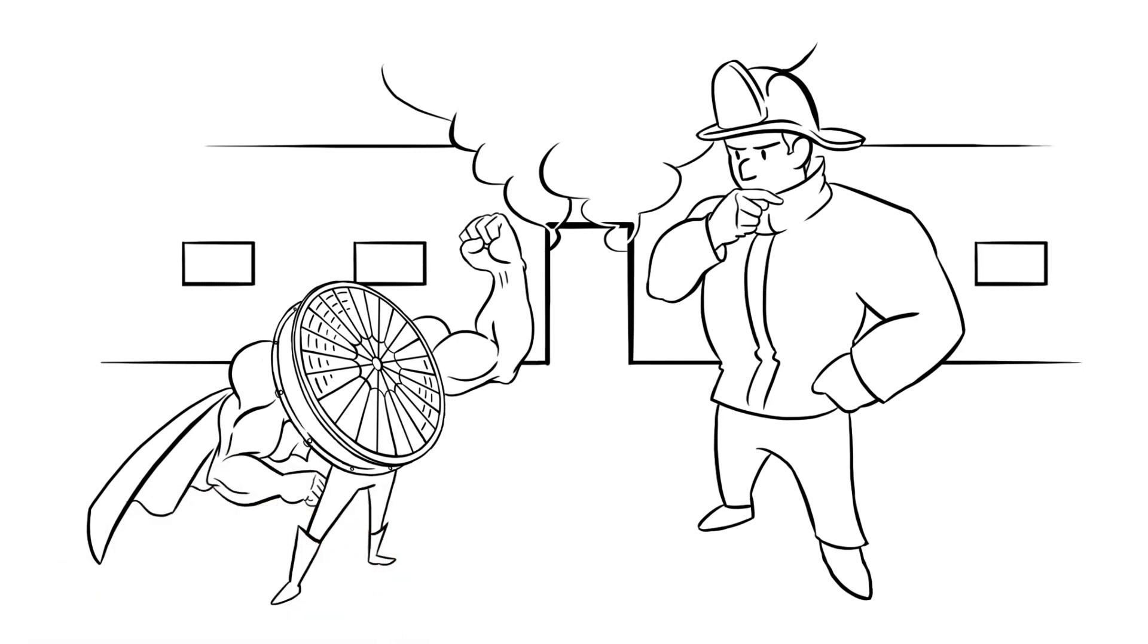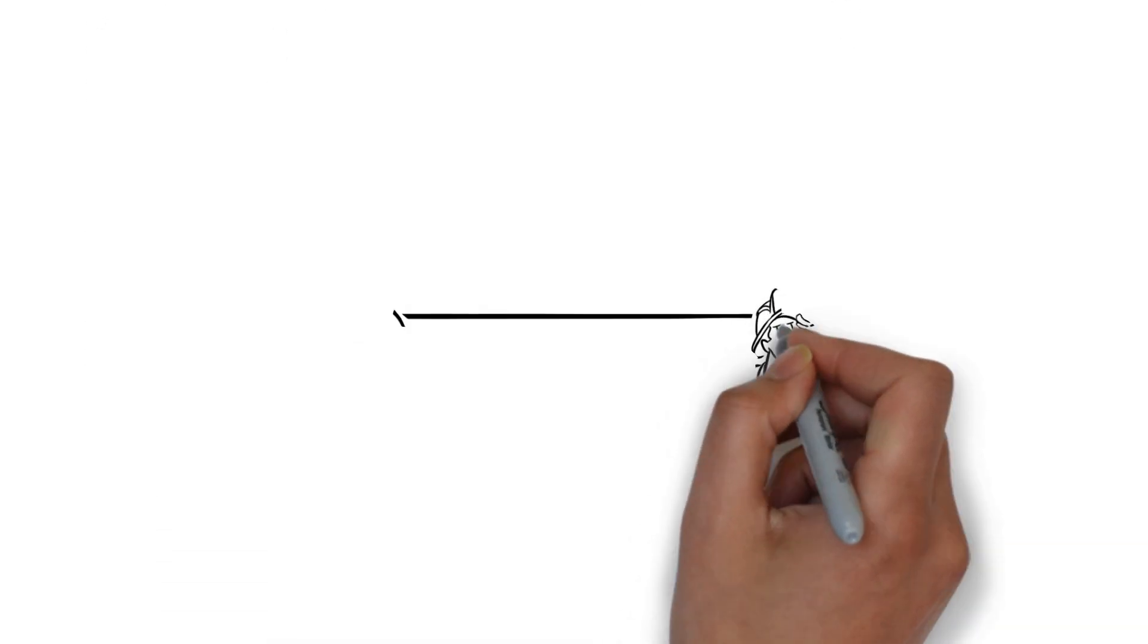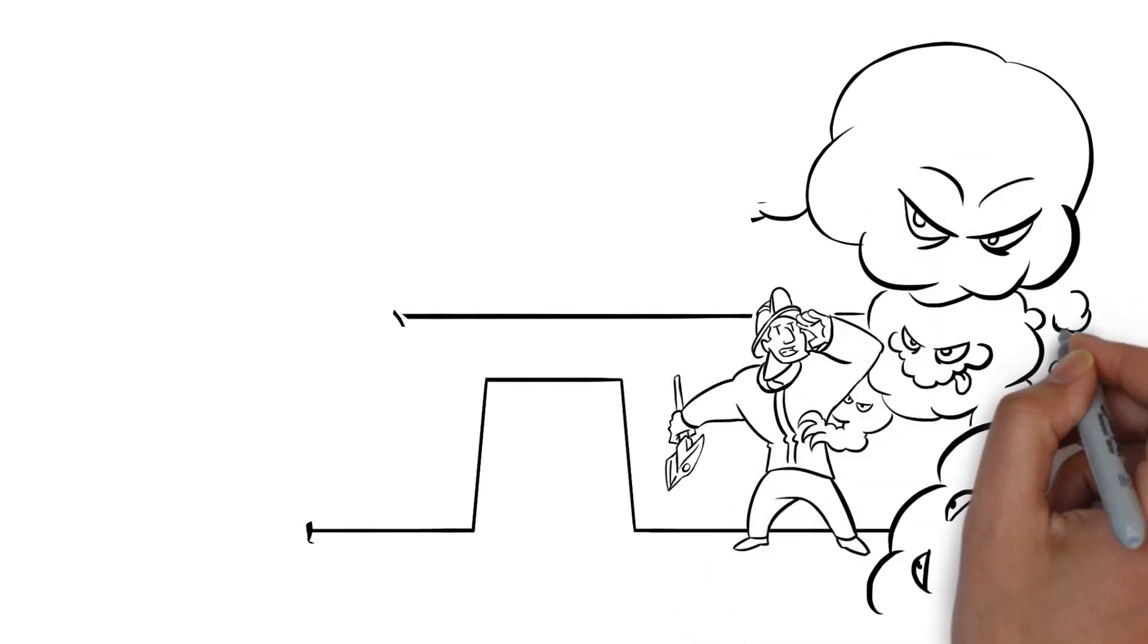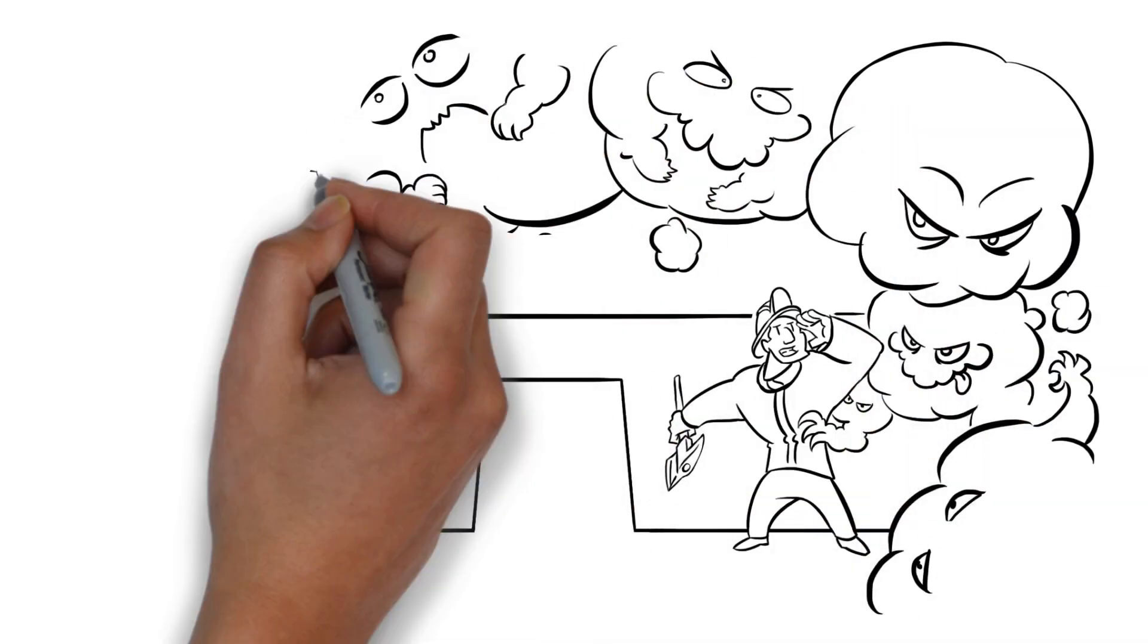So let's take a look at what volumetric airflow at the entrance point is and why that might be important. Let's say you have a structure that is full of little airborne monsters such as smoke, toxins, particulates, poisonous gases, etc.